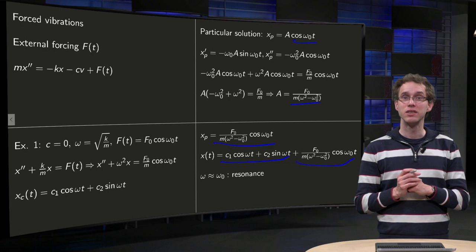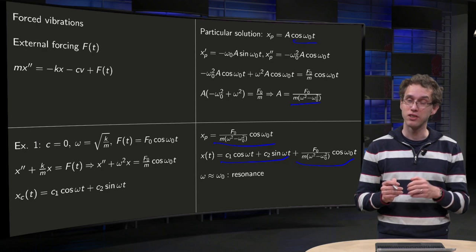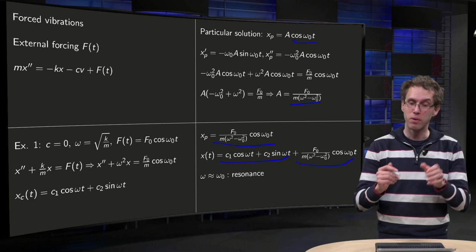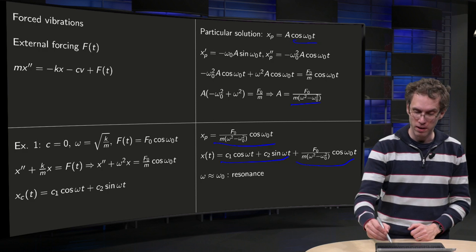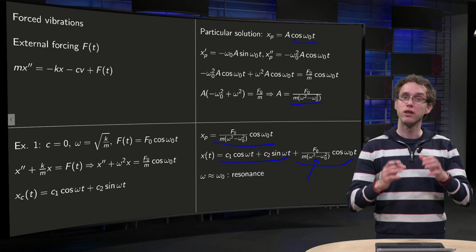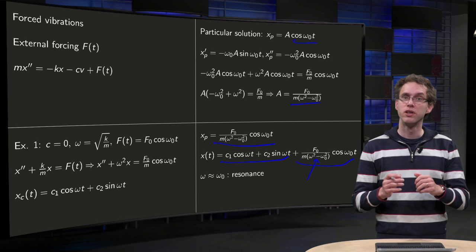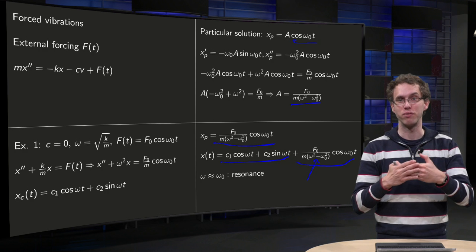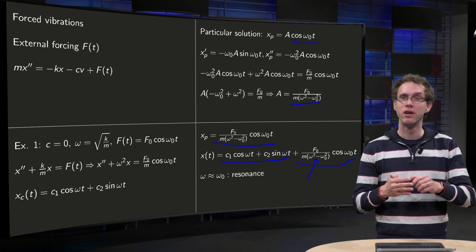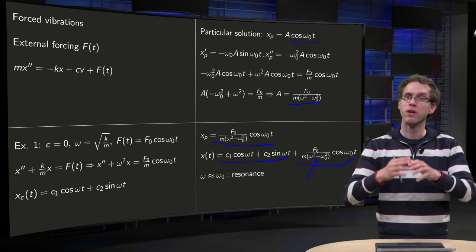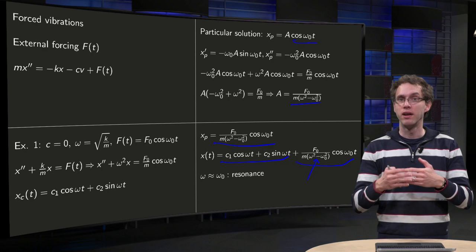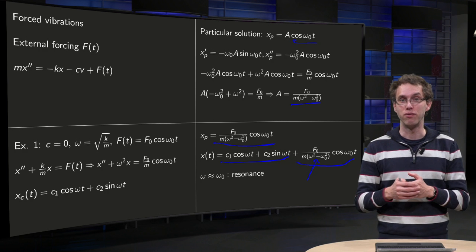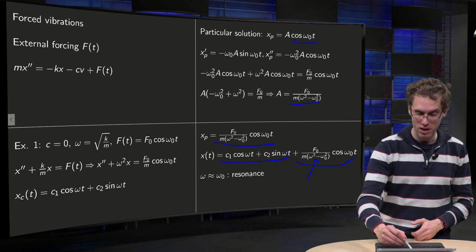And then you see something funny happens if you set omega to or very close to omega_0. If you choose your omega_0 very close to your omega, because then something blows up over here: your particular solution blows up. So if you choose the period of your forcing very close to the natural period of your system, your particular solution blows up. Of course your model doesn't work anymore then, so then you will get a phenomenon which is called resonance.